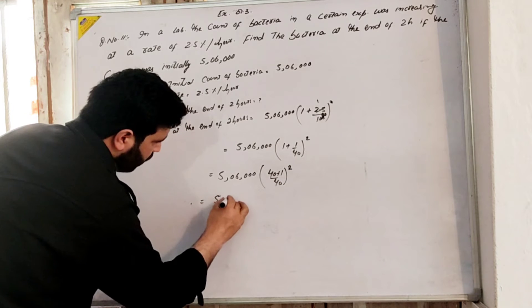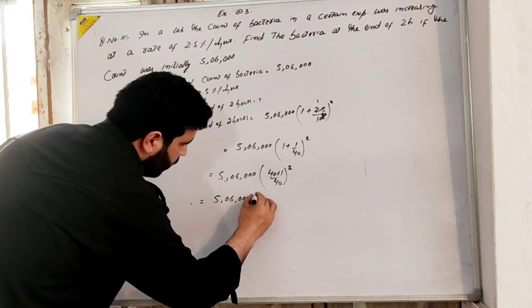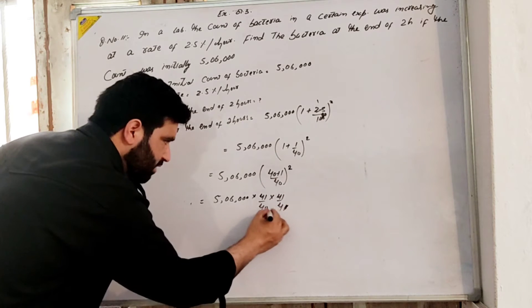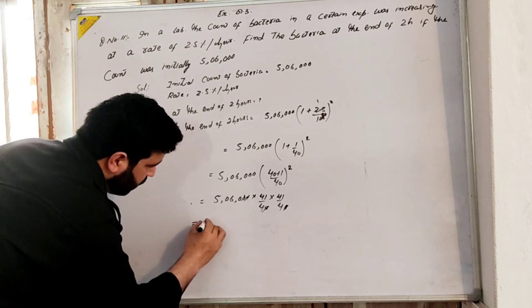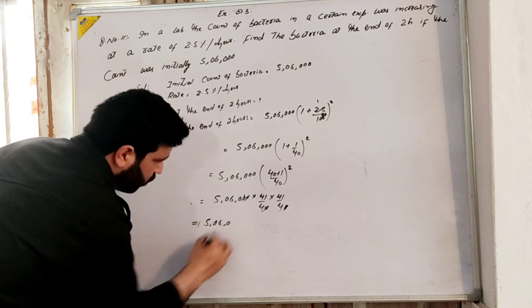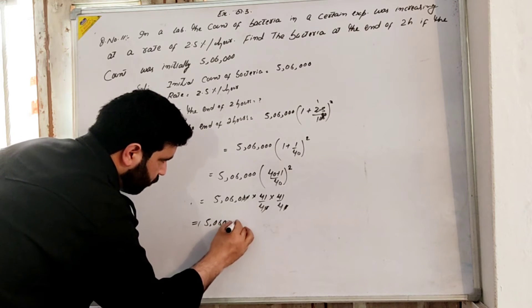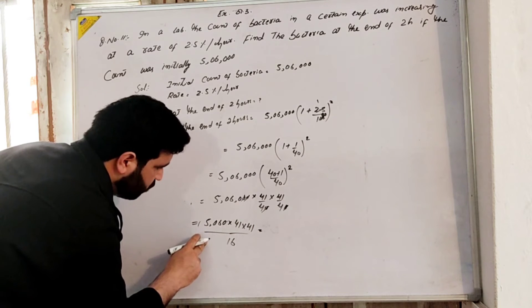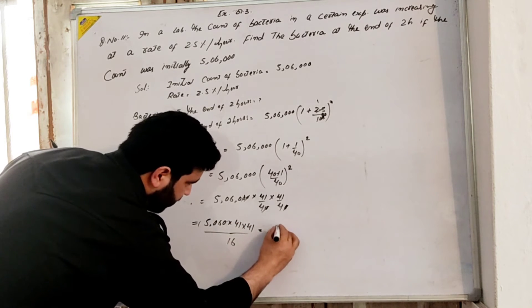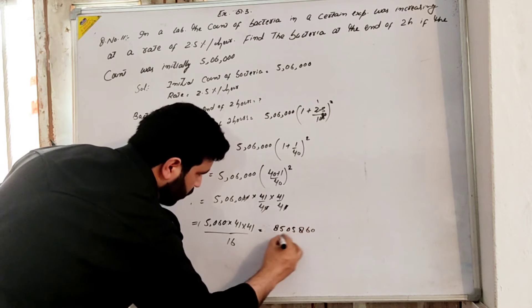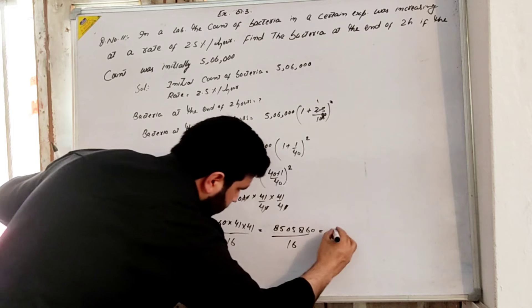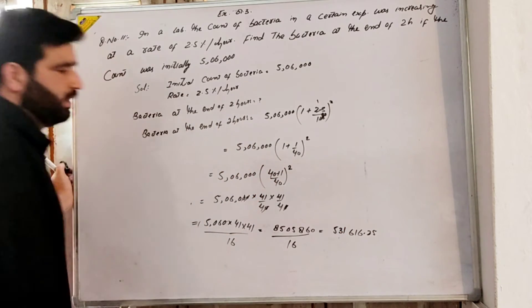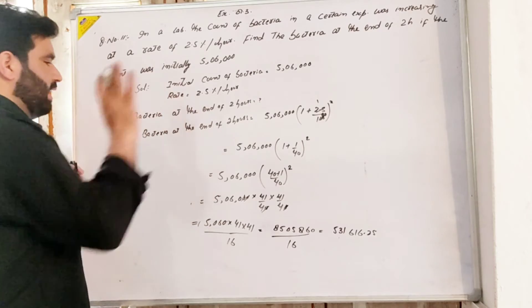This equals 506,000 into 41 divided by 40, which is 506,000 into 41 into 41 divided by 40 times 40. The answer is 506,000 times 41 times 41, which equals 531,606.25. This is the bacteria count at the end of 2 hours.